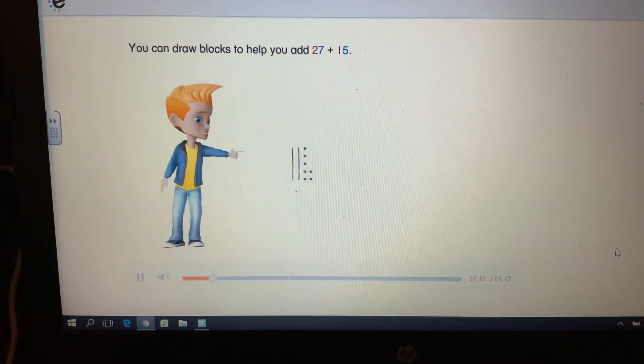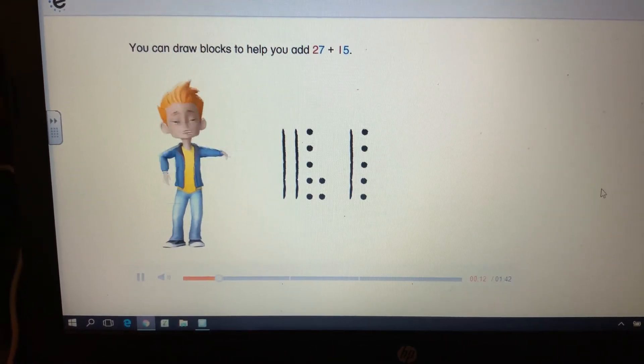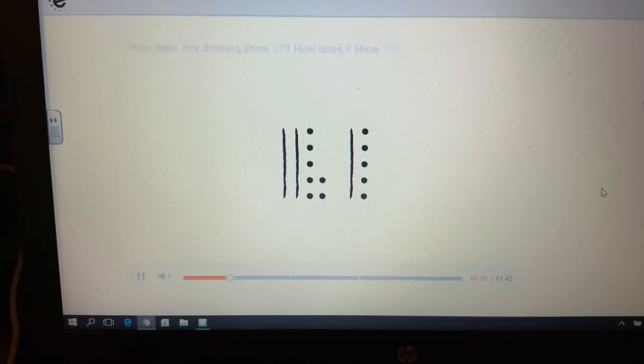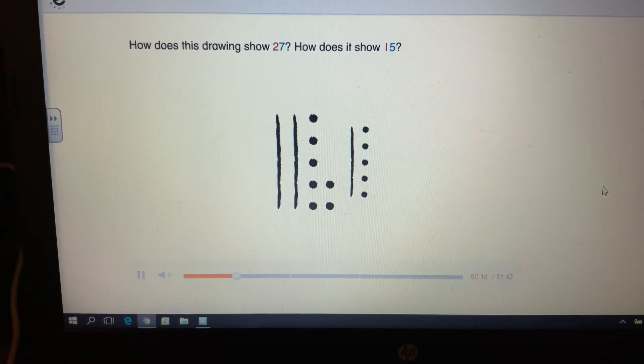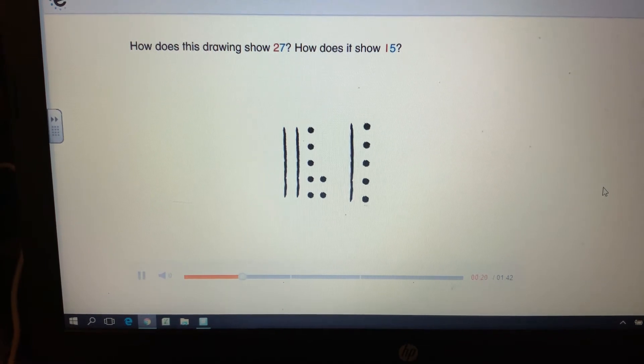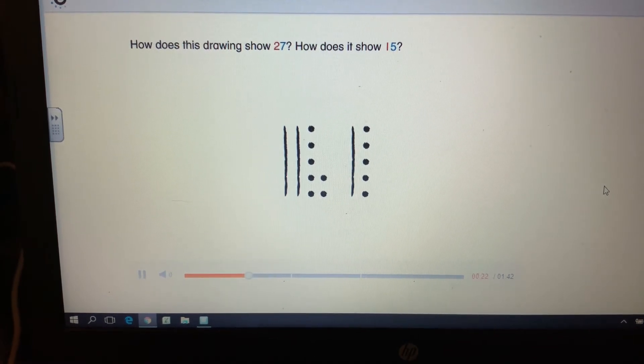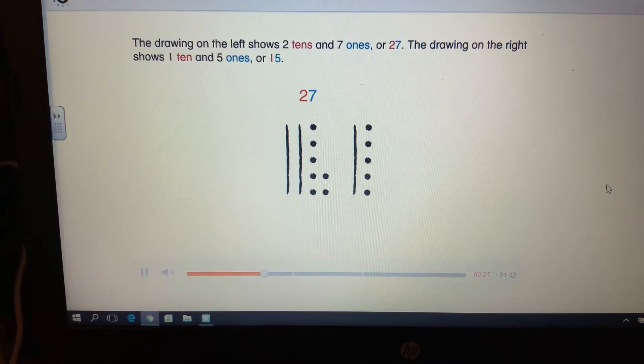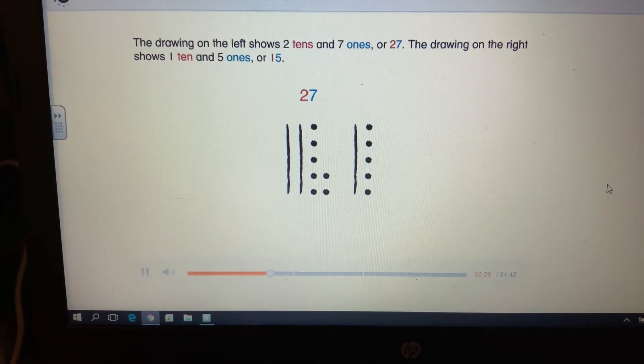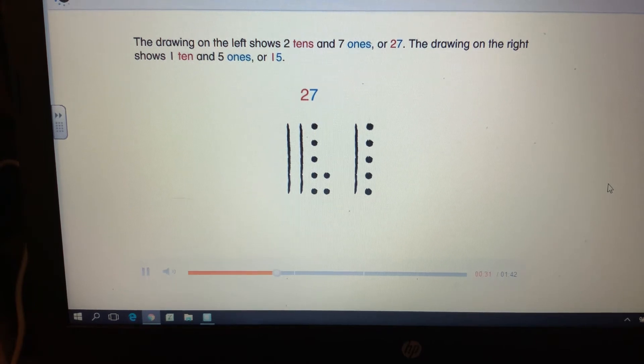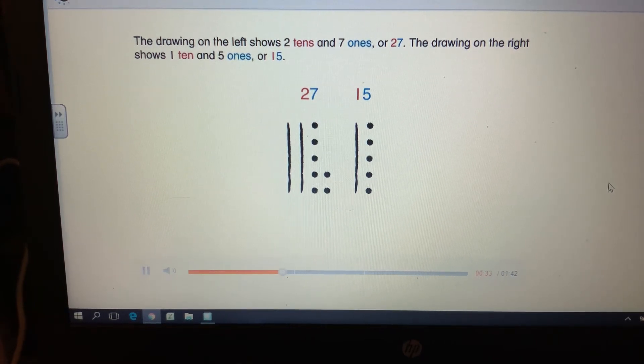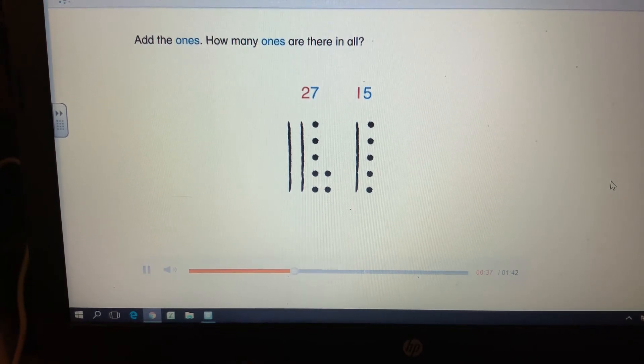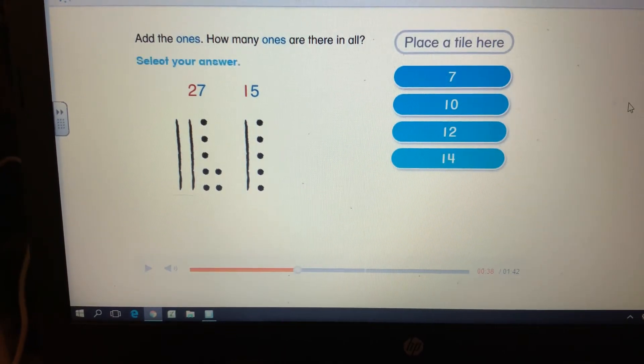You can draw blocks to help you add 27 plus 15. How does this drawing show 27? How does it show 15? The drawing on the left shows two tens and seven ones, or 27. The drawing on the right shows one ten and five ones, or 15. Add the ones. How many ones are there in all? Select your answer.